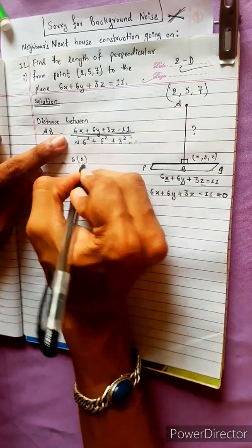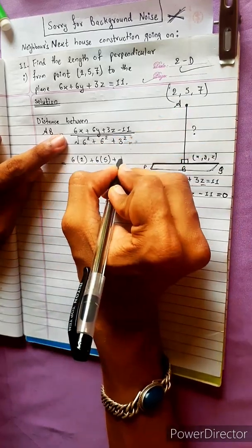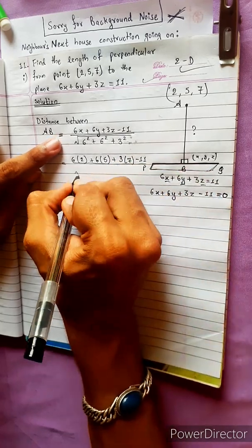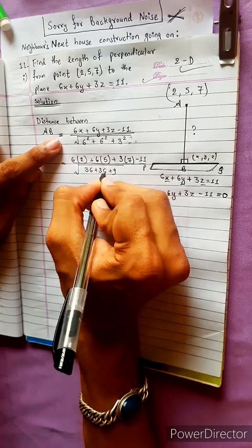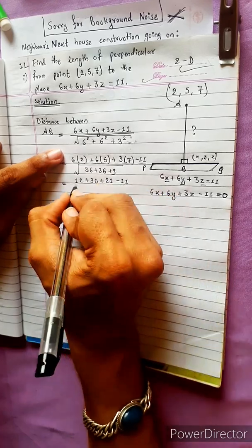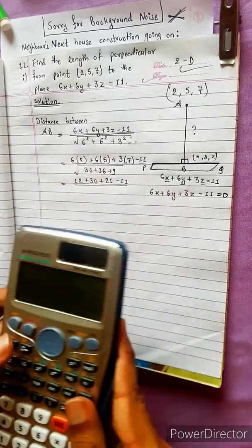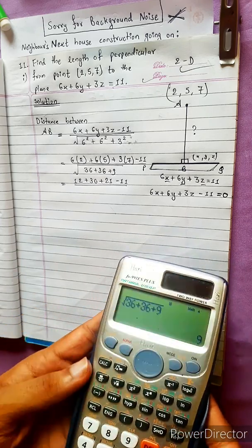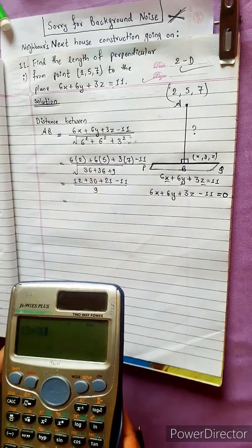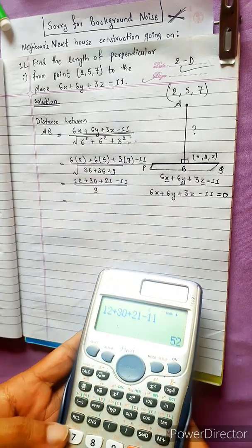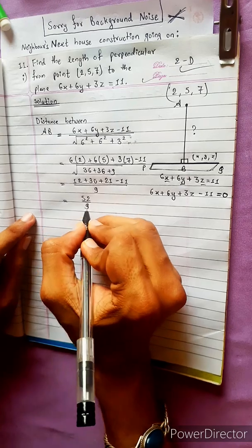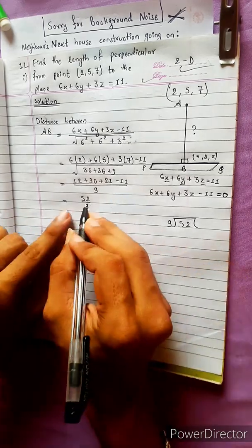Substituting x1, we get 6×2 plus 6×5 plus 3×7 minus 11, divided by 36 plus 36 plus 9, which equals 12 plus 30 plus 21 minus 11, divided by 81. That gives us 52 divided by 9.